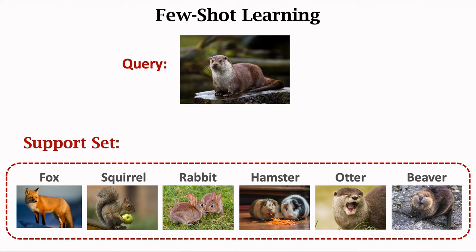Here is the basic idea of few-shot learning. We train a big model using a big training set. Rather than training the model to recognize specific objects such as tiger and elephant, we train the model to know the similarity and difference between objects. With the additional information provided by the support set, the model can tell the query image is an otter, although otter is not among the classes in the training set.